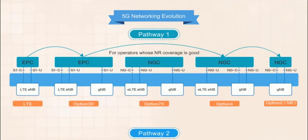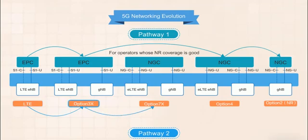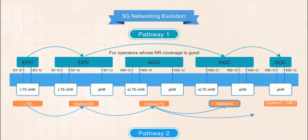In Route 2, on the bottom, we still start with an LTE architecture and then move onto Option 3X, but then we move onto the transitional networking option, Option 7X. Option 7X networks can then be evolved to Option 4 or Option 2. The entire route includes two NSA scenarios and this pathway is better for operators with poor NR coverage.